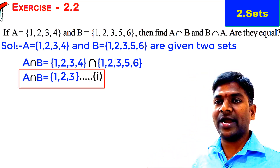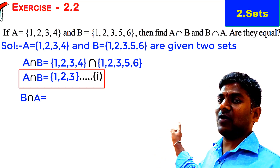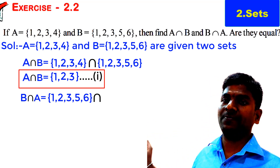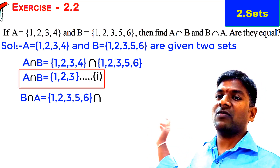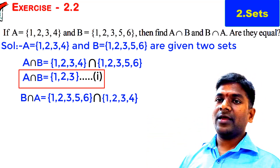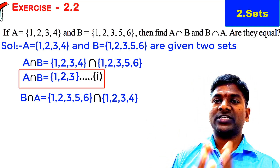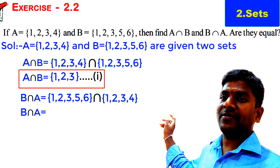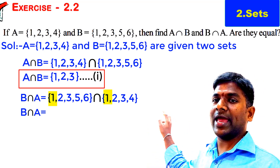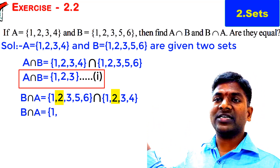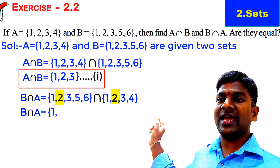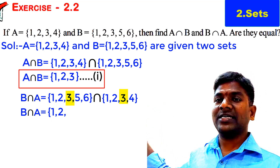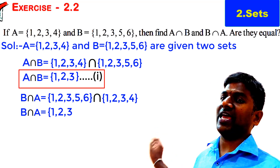Next, we find B intersection A. B intersection A: the elements of B are {1, 2, 3, 5, 6}, the operation is intersection, and the elements of Set A are {1, 2, 3, 4}. B intersection A means the common elements of Set B and A. 1 is an element of both Set B and Set A, so we take 1. 2 is also an element of both Set B and Set A, so we take 2. 3 is also common in both sets, so we take 3.